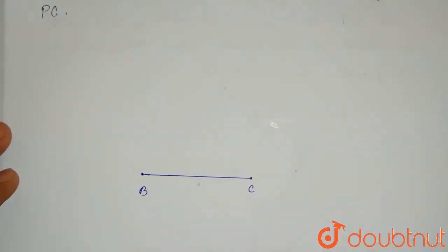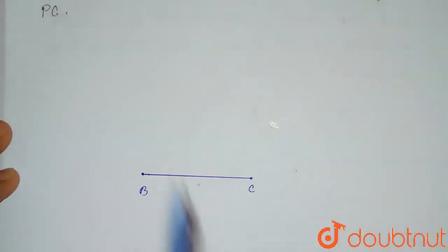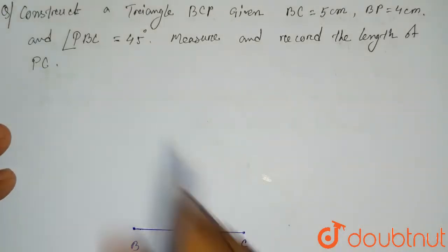Now what we have to draw? We have to draw PB line which will be making the angle PBC which is 45 degrees, given in the question.